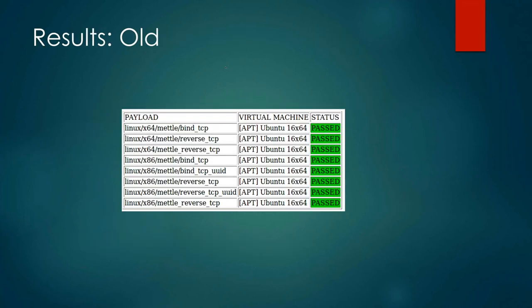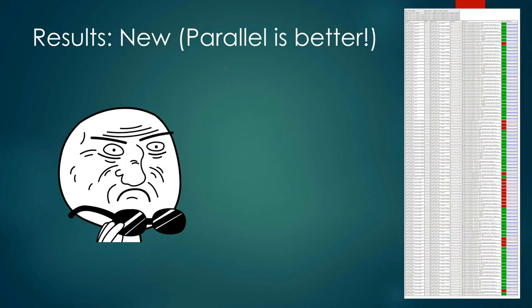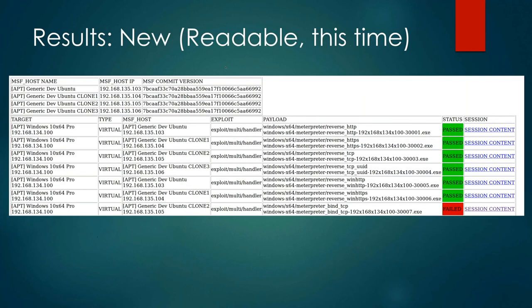The old results were simple — just the payload, the machine it ran against, and whether it passed. The new one allows us to do a lot more tests and pair an exploit and payload together. We have Windows 10 64-bit, a generic Ubuntu host, the exploit used, the payload used, and whether it passed. When you have the HTML report, you can click on the session content and get the entire session that was generated, so if you want to see why it failed, you just click on session content.